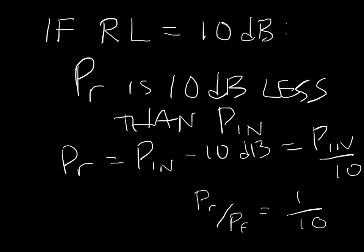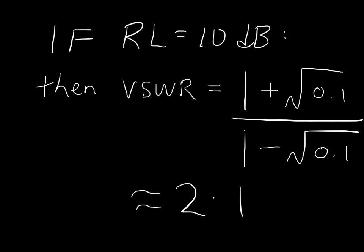So PR over PF is one tenth. Now, if we were to apply that, the PR over PF is 1 over 10, or 0.1. We apply that to the VSWR formula, we'll get something like 2 to 1. So return loss of 10 dB corresponds to a VSWR of 2 to 1.